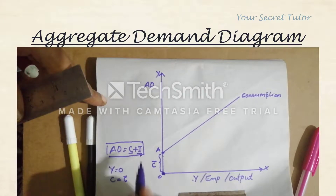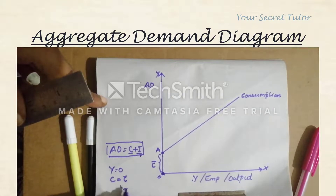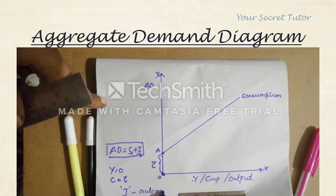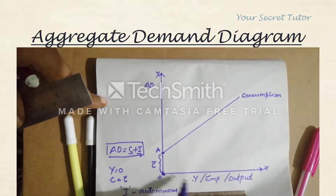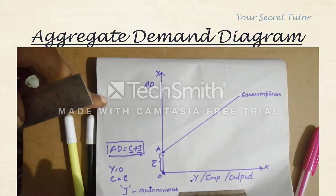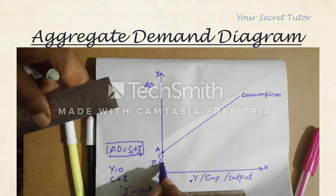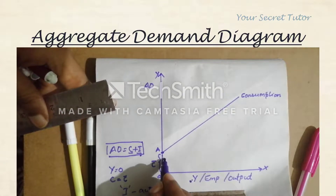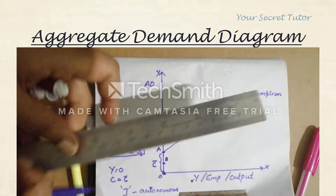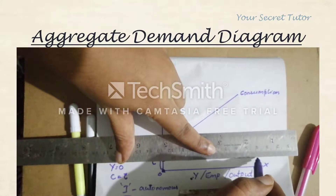In Keynesian theory, one assumption is that investment is autonomous — it is independent of income or employment. Whatever the level of income or employment, the amount of investment remains fixed. This is represented by a horizontal straight line parallel to the X-axis, showing a fixed amount of autonomous investment.